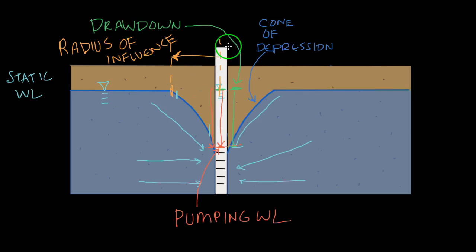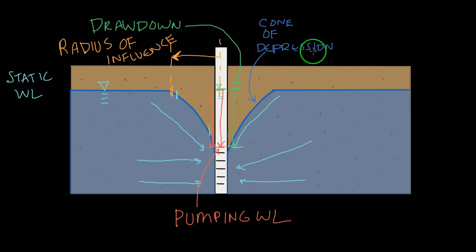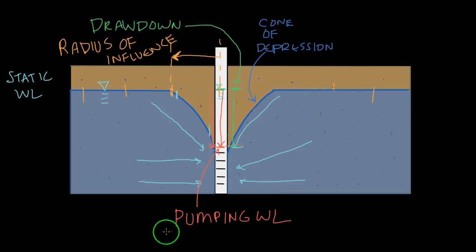I think this is a good stopping point — I don't want to bombard you with too much information. In the next video, we're going to be talking about the cone of depression a little more, and how far out it can reach — how certain properties of the aquifer, pumping rates, and some other things determine how far out this cone of depression will reach. I'll put that video in the comment section. If you found this useful, go ahead and like the video and subscribe to the channel, and I'll see you in the next one.